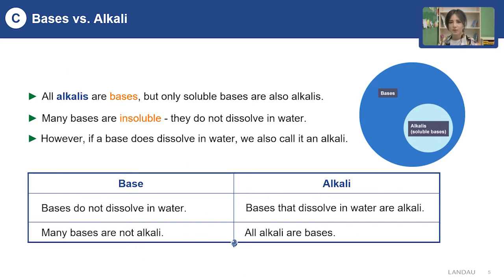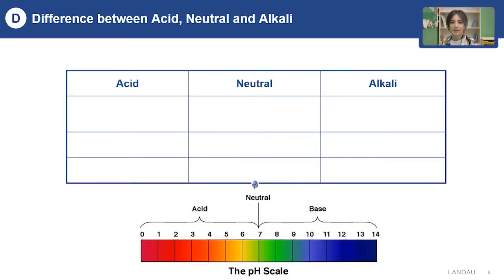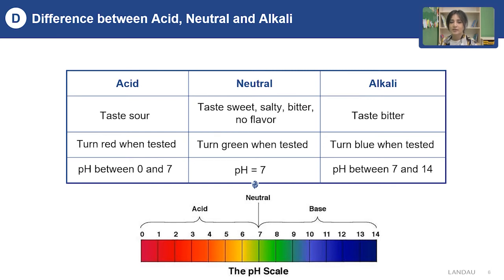Now let's learn the differences between acids, alkalis, and neutrals. Acids taste sour, alkalis taste bitter, and neutrals can taste sweet, salty, bitter, or have no flavor. Now let's talk about their colors with indicators: acids turn red, neutrals turn green, and alkalis turn blue.